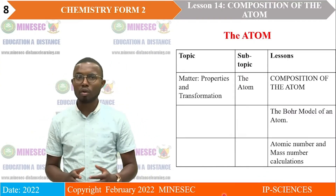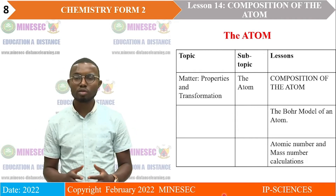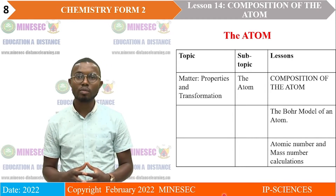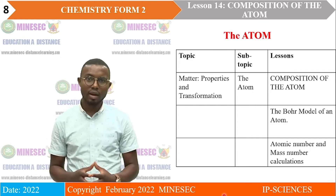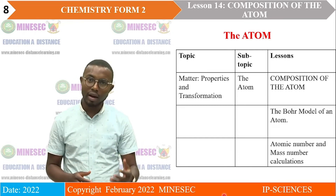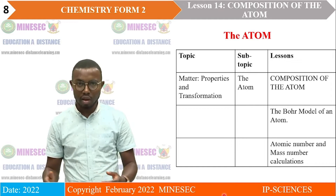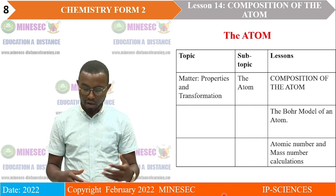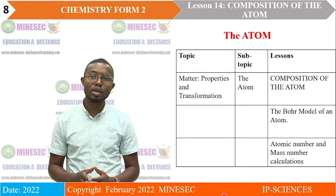Our topic of today is the atom. This topic will be divided into the following lessons: composition of the atom, followed by the Bohr model of an atom, and lastly atomic number and mass number. After that, we will do calculations — how to determine the mass number when we know the number of protons or neutrons, and how to determine the number of protons from the atomic number.